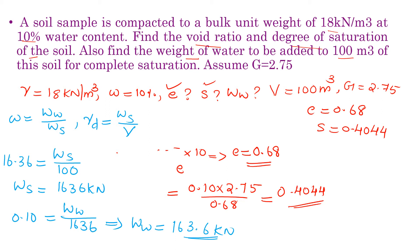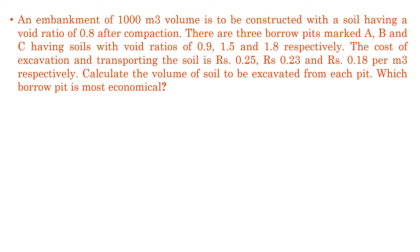You have to remember all the formulas in order to calculate the required values. Next question: an embankment of 1000 m³ volume is to be constructed with soil having a void ratio of 0.8 after compaction. There are three borrow pits marked A, B and C having soils with void ratios 0.9, 1.5 and 1.8 respectively. Cost of excavation and transporting the soil is Rs. 0.25, 0.23 and 0.18 per m³. Calculate the volume of soil to be excavated from each pit.